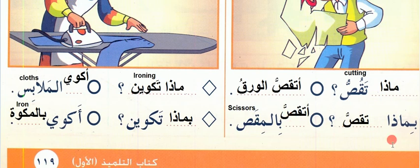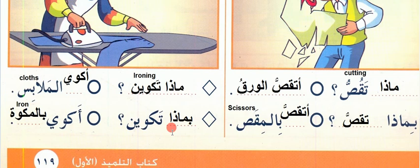By what? What you are ironing? I am ironing the clothes. By what you are ironing? I am ironing with the iron.